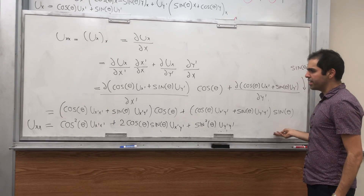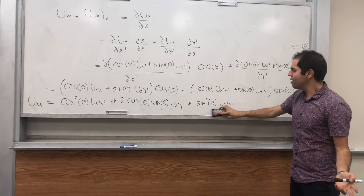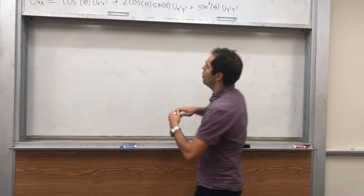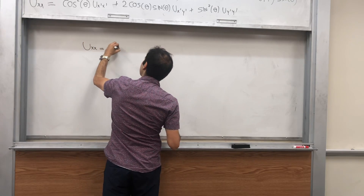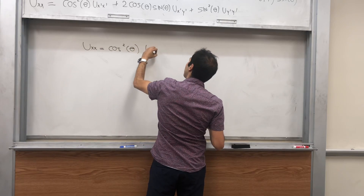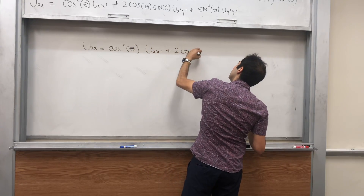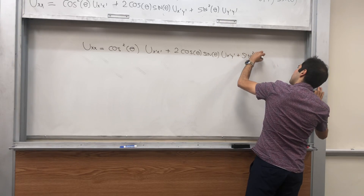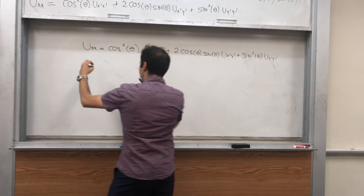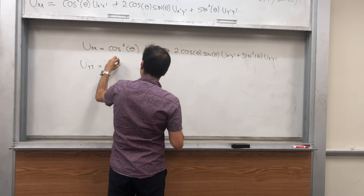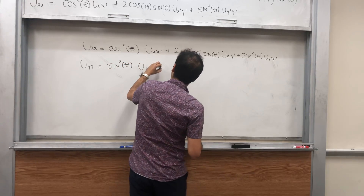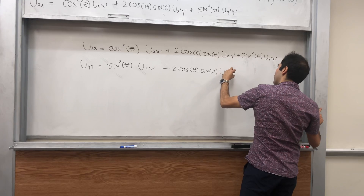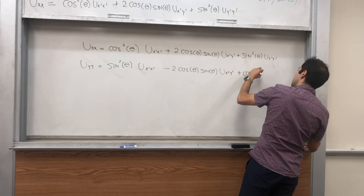So u_xx is cosine squared theta times u_x'x' plus 2 cosine theta sine theta times u_x'y' plus sine squared theta times u_y'y'. It turns out if you do the same thing with u_yy, you get sine squared theta times u_x'x' minus 2 cosine theta sine theta times u_x'y' plus cosine squared theta times u_y'y'.